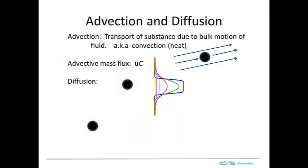So we have these linked processes of advection and dispersion. Let's first look at a special case of dispersion — diffusion — which we've seen before. This is a process where compounds spread out in response to a concentration gradient. But first let's take a look at advection: transport of a substance due to the bulk motion of the fluid. It's also known as convection, particularly when heat is being transported. When mass is being transported it's usually called advection. An advective mass flux is the velocity or volumetric flux times the concentration.